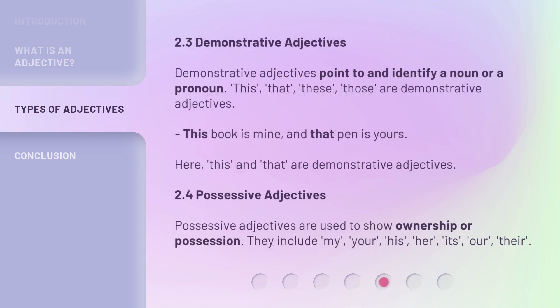2.3 Demonstrative Adjectives. Demonstrative adjectives point to and identify a noun or a pronoun. This, that, these, those are demonstrative adjectives.